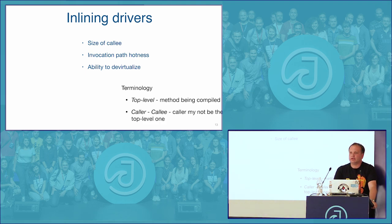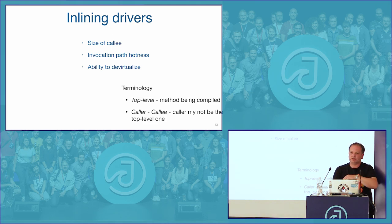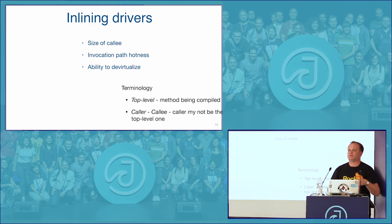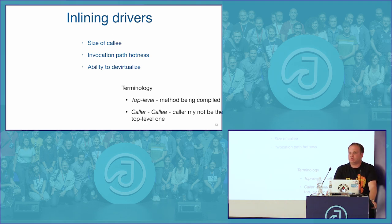Modern compilers do multiple iterations: try the first wave of inlining, do some optimization passes — through which code may reduce and shrink — giving room for further inlining, then do another round. This iterative process stops at some point because the size of the produced code must be limited. Inlining is also driven by hotness: if there are two candidates and budget for only one, we inline the hot one. Cold-path callees are not prioritized.